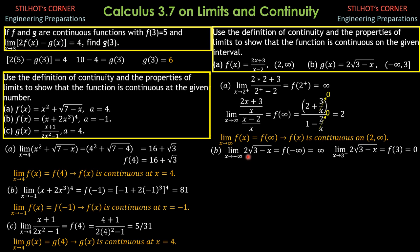Since the limit of g(x) as x approaches −∞ and the function value when a is −∞ are both +∞, and for the right endpoint the limit of g(x) as x approaches 3 equals the function value g(3) = 0, both the limit and function value are equal. Therefore the function g(x) is continuous on the given interval.